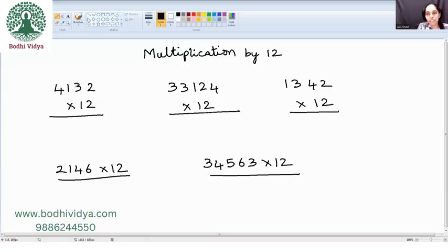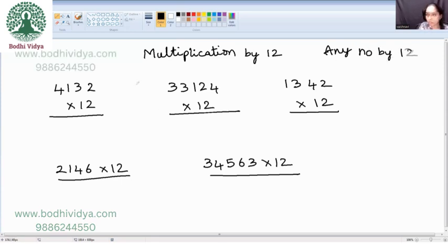Any number by 12. See, now we have, it can be any number - it might be 2 digits, 3 digits, 4 digits, 6 digits, any number by 12. So, we need to multiply 4, 1, 3, 2 into 12. At the first phase, what we are supposed to do, we need to multiply this 1 with this first number.